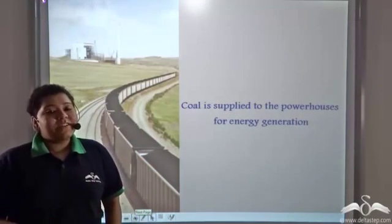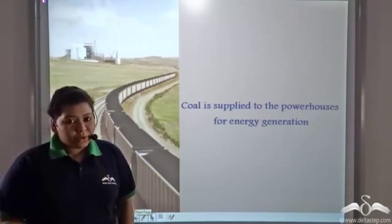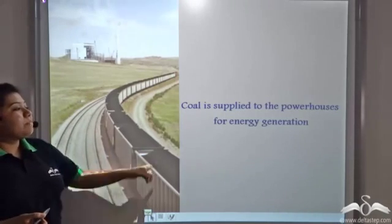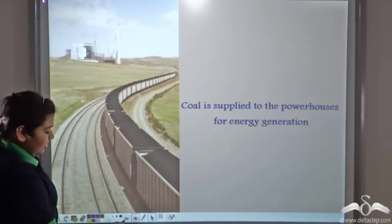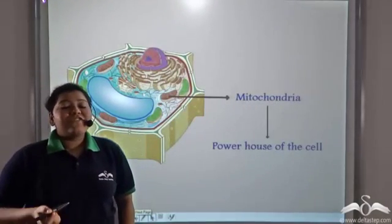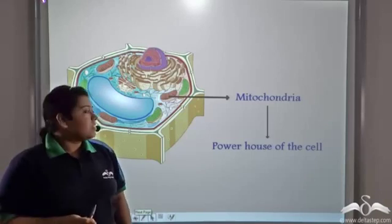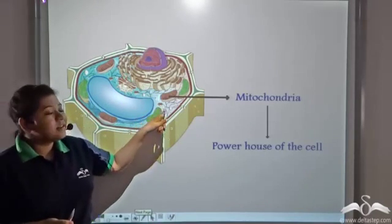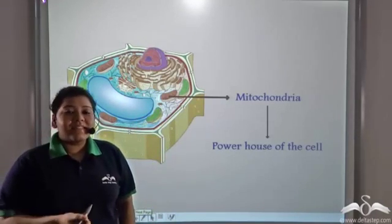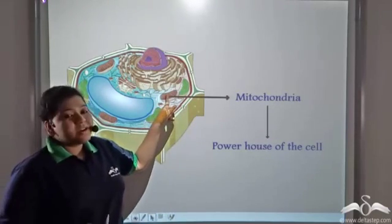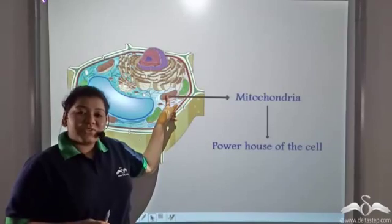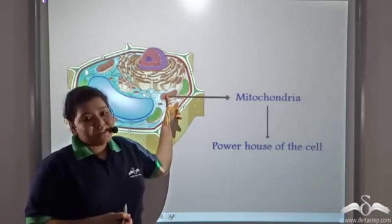Now, after the breaking down of coal, coal is supplied to the powerhouses for energy generation. Similarly, after breakdown of glucose in the cytoplasm during glycolysis, this broken down glucose is sent to the mitochondria of the cells, which is known as the powerhouse of the cell.